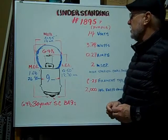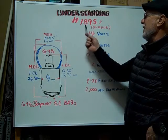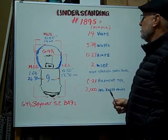Hi, here at Bulbtown. We want to help you understand and identify the number 1895P purple miniature bulb.